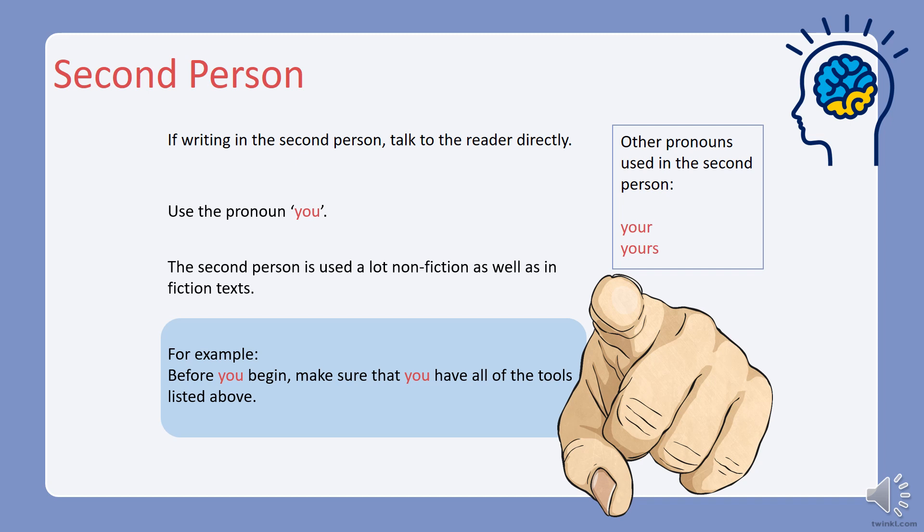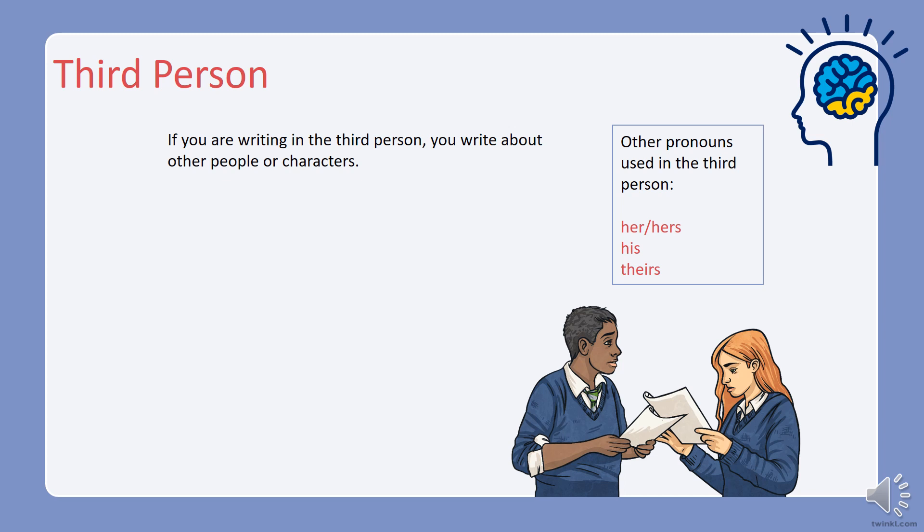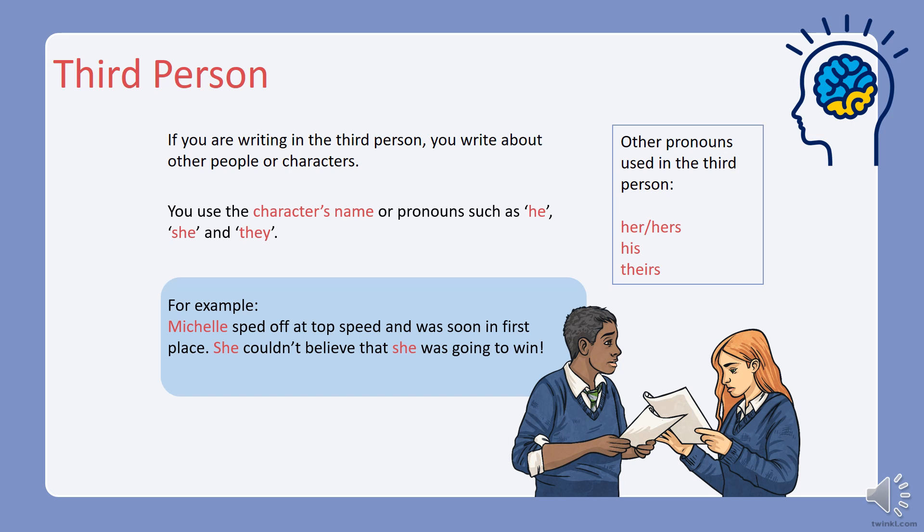Third person: if you're writing in the third person, you write about other people or characters. You use the character's name or pronouns such as he, she, and they. This is the person you use most often in your writing, and probably read most often too. For example: 'Michelle sped off at top speed and was soon in first place. She couldn't believe that she was going to win.' Other pronouns you might use in the third person are: her, hers, his, and theirs.